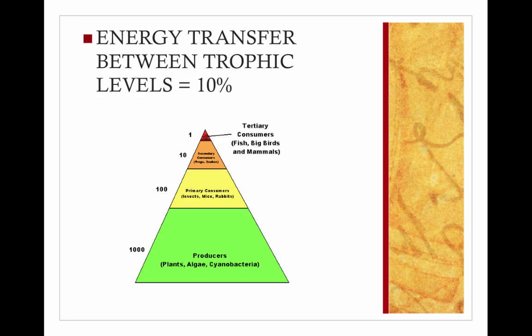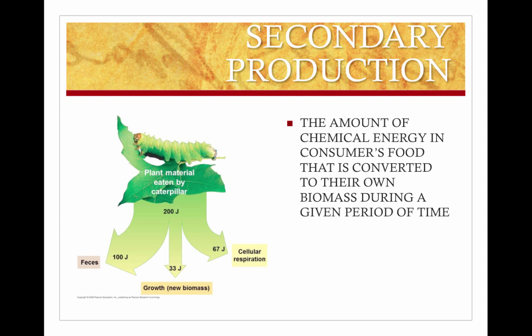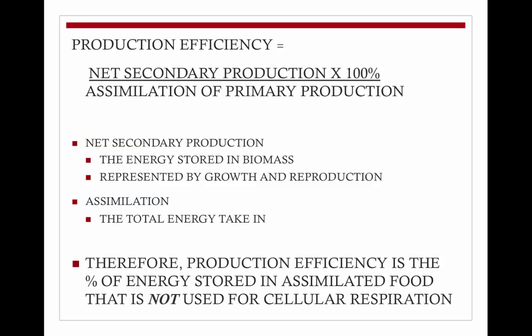The energy transfer between trophic levels is about 10%. Secondary production is the amount of chemical energy in consumers' food that is converted to their own biomass during a given period of time. We can measure the efficiency of animals as energy transformations: production efficiency equals net secondary production times 100 divided by assimilation of primary production. Net secondary production is the energy stored in the biomass — we can look at growth and reproduction — while assimilation is all of the energy taken in. Production efficiency is the percentage of energy stored in assimilated food that is not used for cellular respiration.